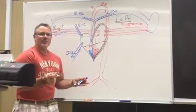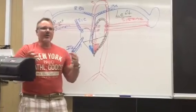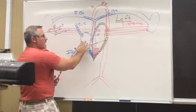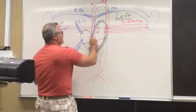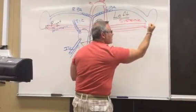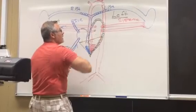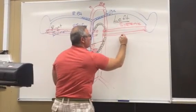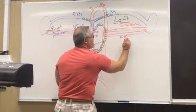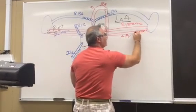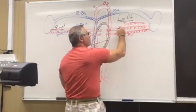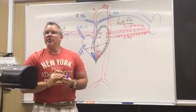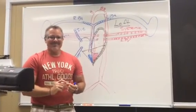The aorta then splits into the common iliacs — one going into each side to bring oxygenated blood into the legs. Remember, anything with the term 'common' will divide into an internal and external branch. The right side sends deoxygenated blood to the pulmonary system; oxygenated blood returns into the left atrium via the pulmonary veins. Note that although those vessels carry oxygenated blood, they are still called veins. On the heart model, red vessels are arteries and blue vessels are veins.